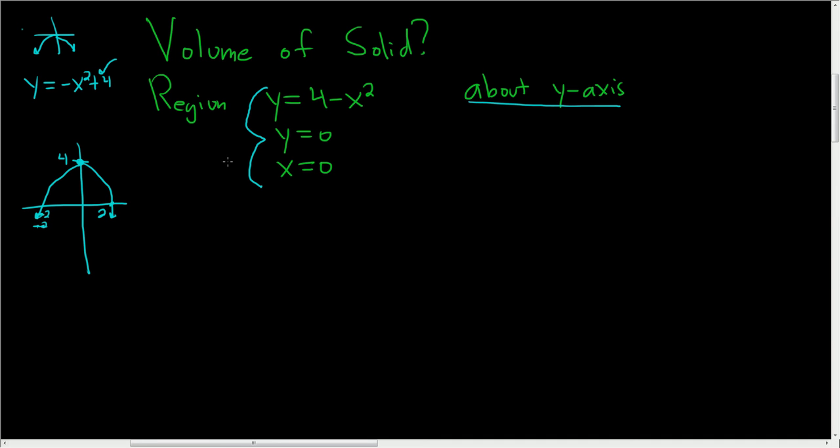We also have these lines y equals 0 and x equals 0. Y equals 0 is this horizontal line and x equals 0 is this line here. So we're just going to focus on this piece here and we're spinning it about the y-axis.